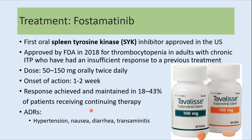Fostamatinib is an oral spleen tyrosine kinase inhibitor approved by the FDA in 2018 for thrombocytopenia in adults with chronic ITP who had an insufficient response to previous treatment. The dose is 50 to 150 mg orally twice daily, with onset of action around one to two weeks. Approximately 18 to 43 percent of patients achieve and maintain a response. Common adverse effects include hypertension, nausea, diarrhea, and transaminitis.